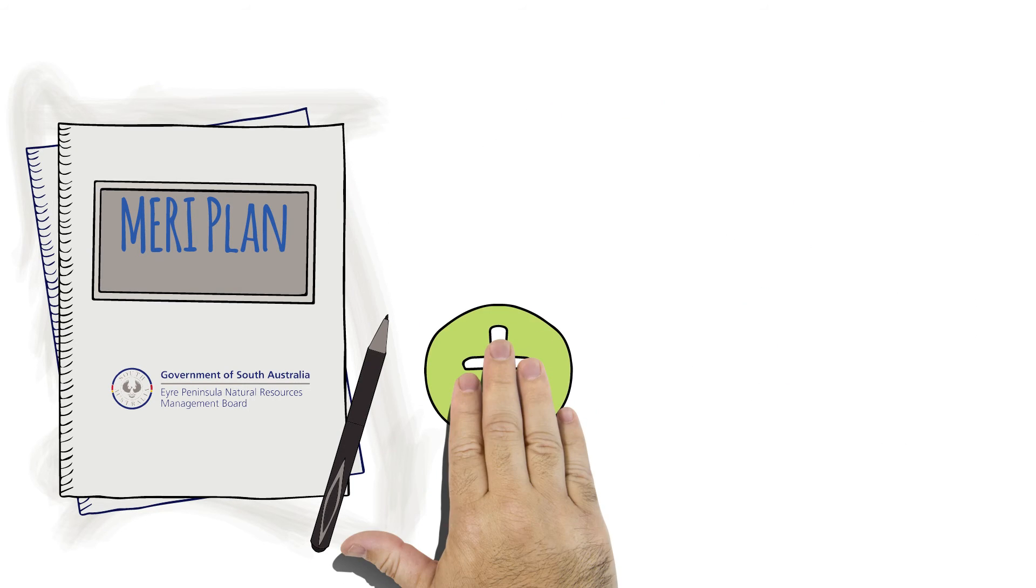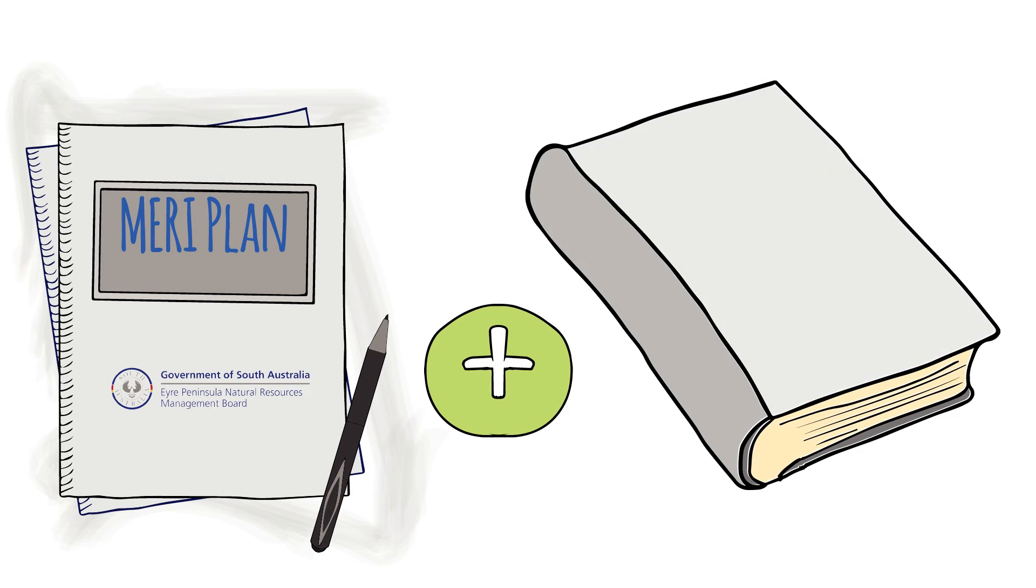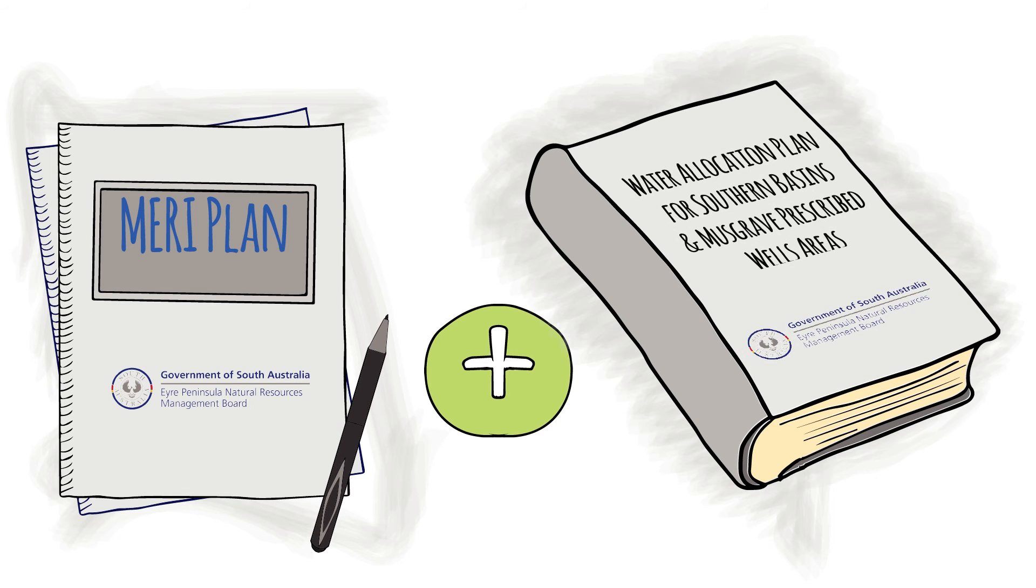The MERI Plan also aims to assess how well the WAP is working and if it meets its objectives. This information will be used to help inform the review of the WAP every five years.